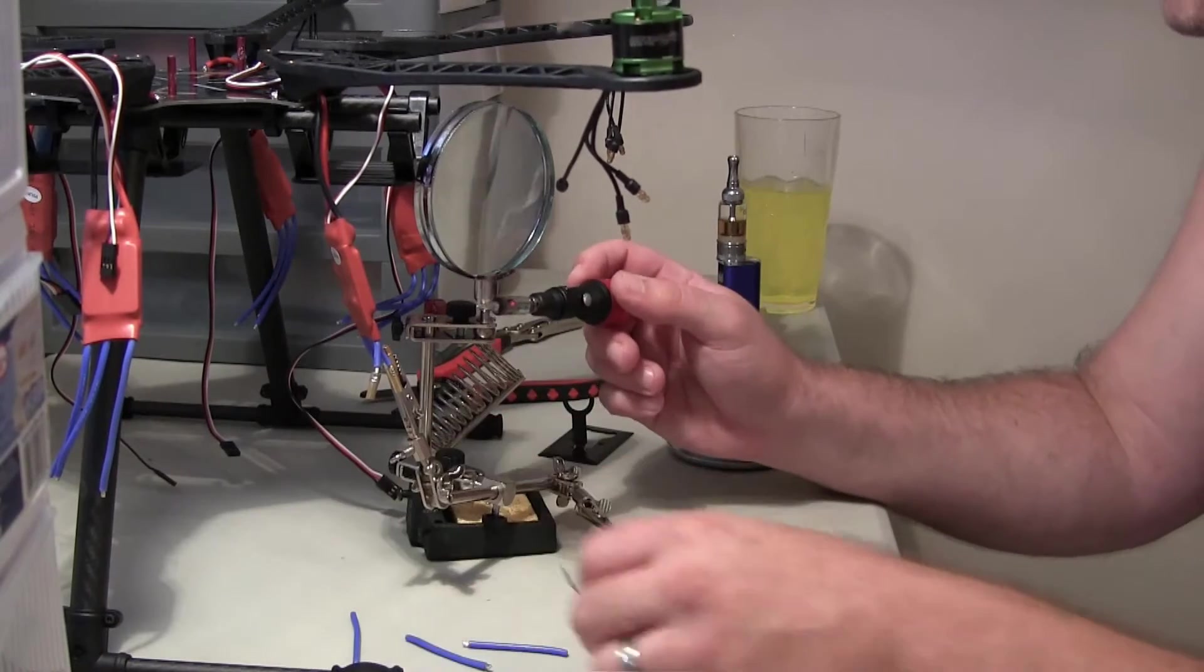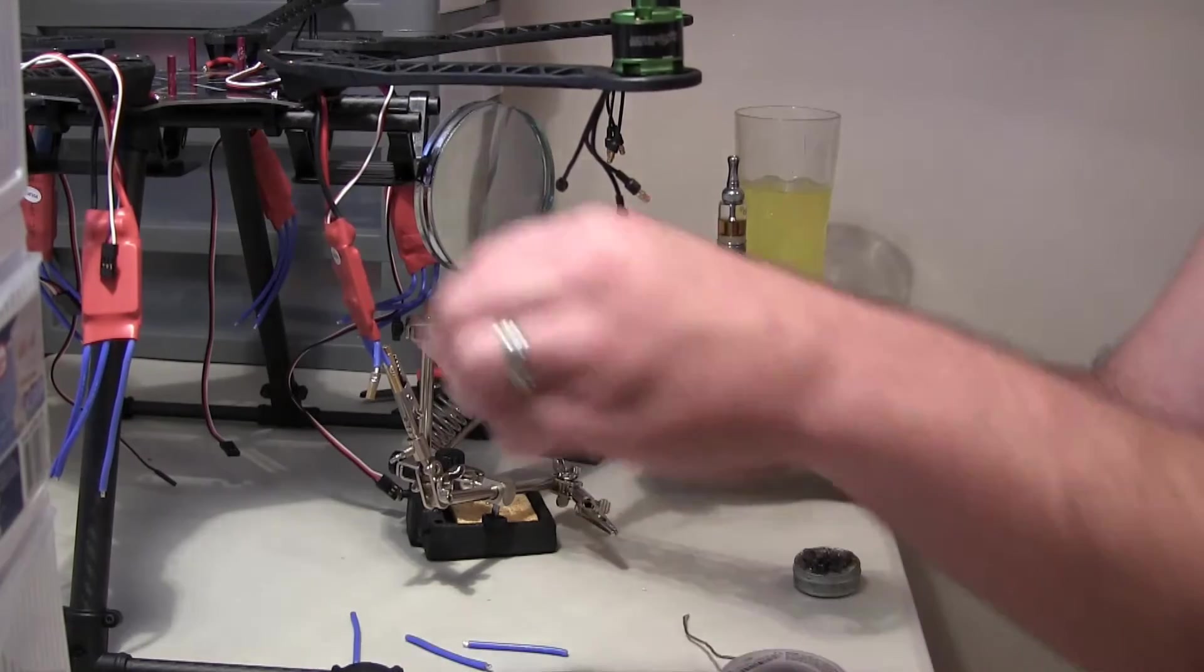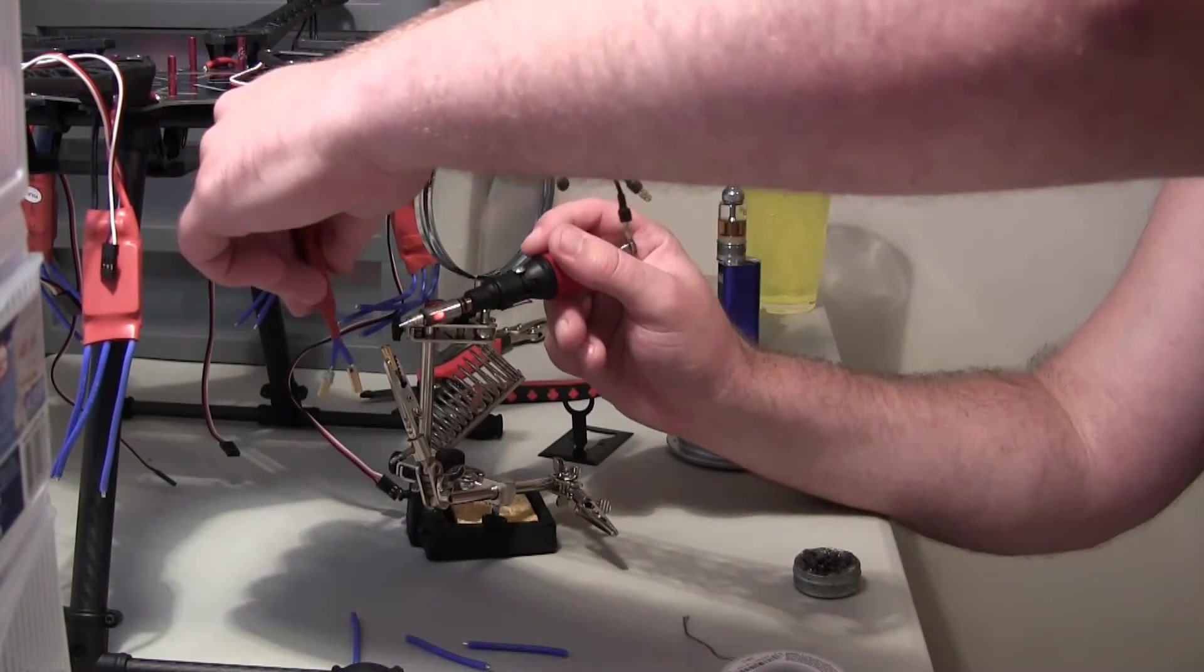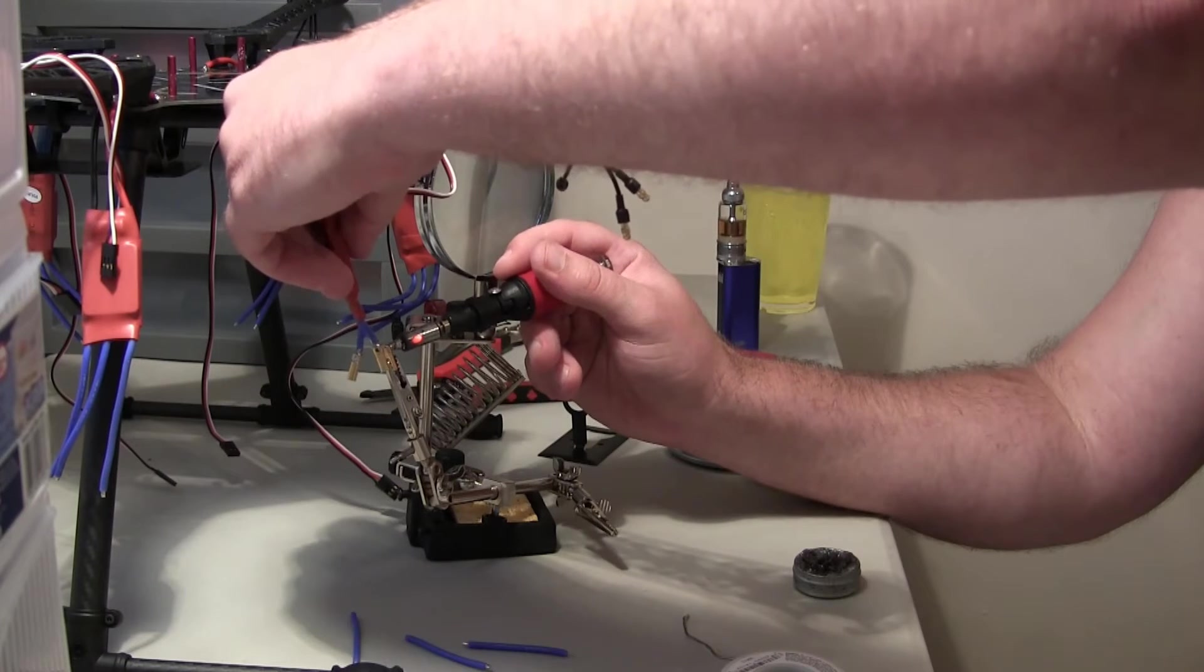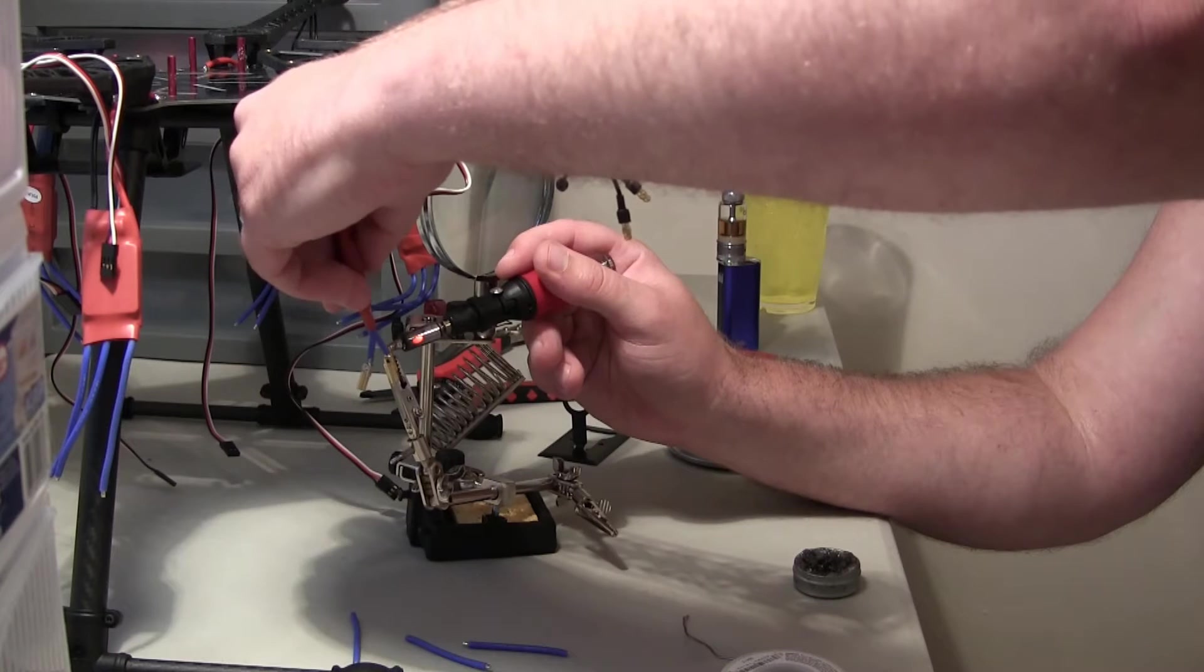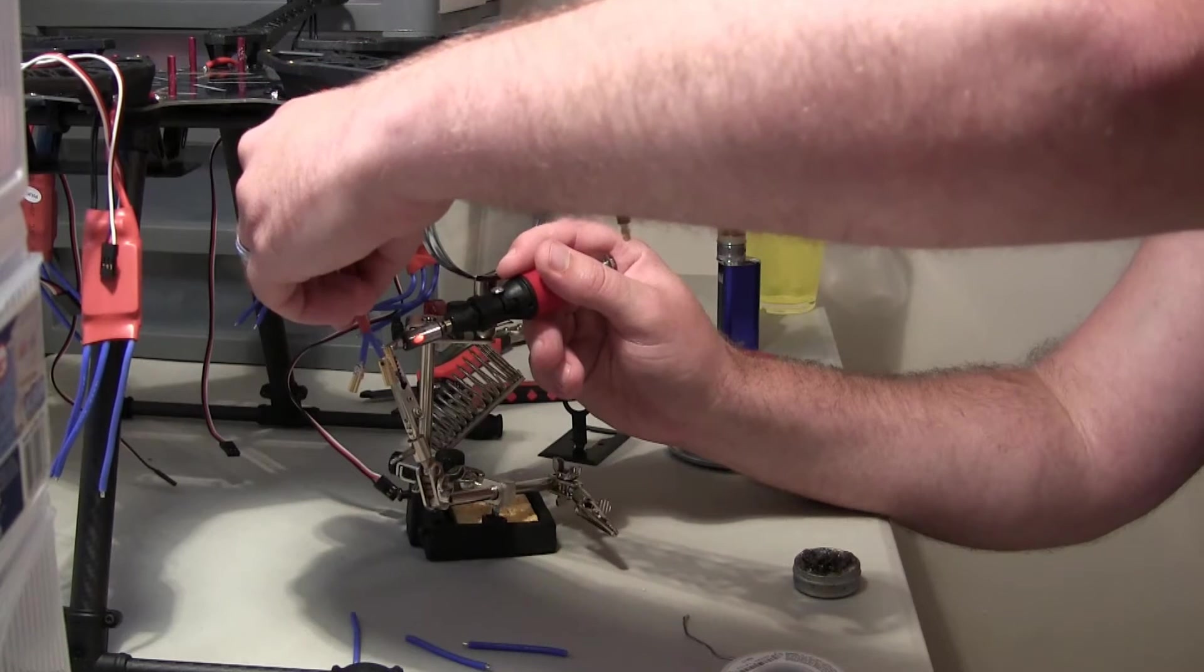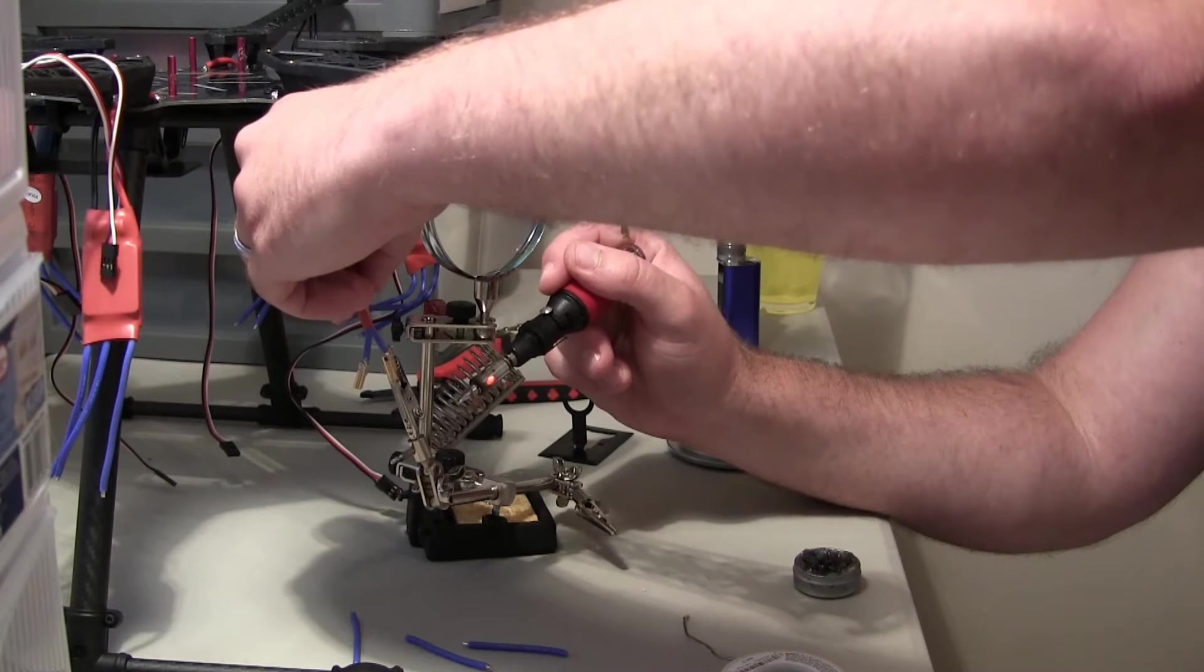And I normally like to hard solder my connections, but in this case, since I don't know the orientation of the motors yet, or which way I'm going to have them spinning with different wires. I haven't used these ESCs before, so I am going to just use the bullet connectors.